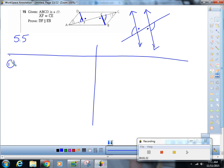So number one, ABCD is a P-gram, and AF is congruent to CE. That's given. So I have this is congruent to that. Okay?